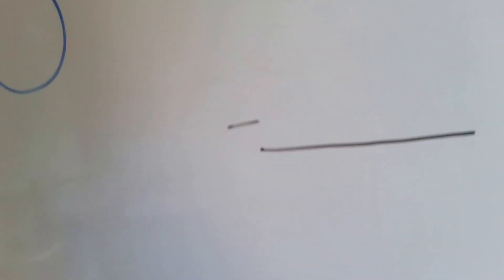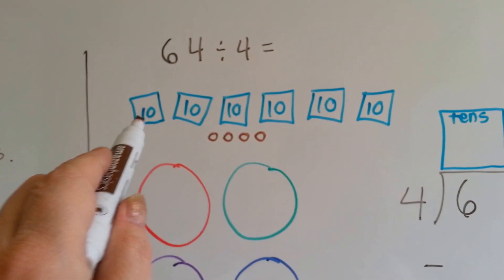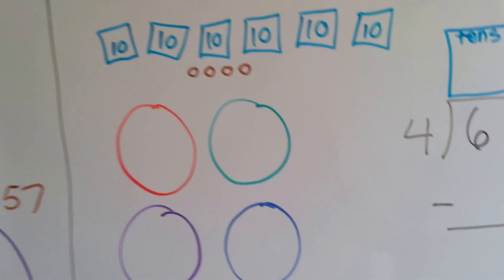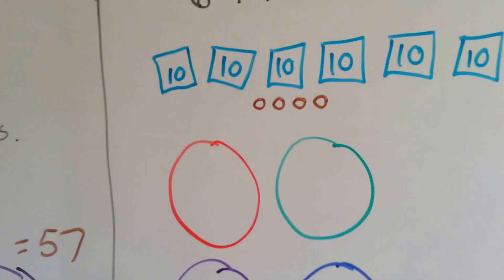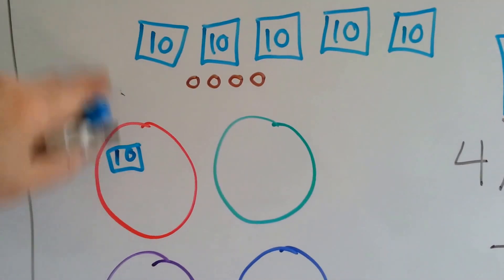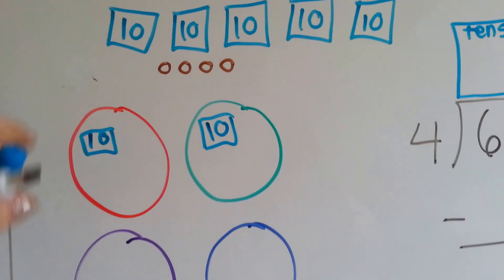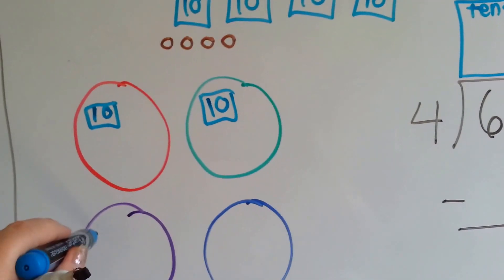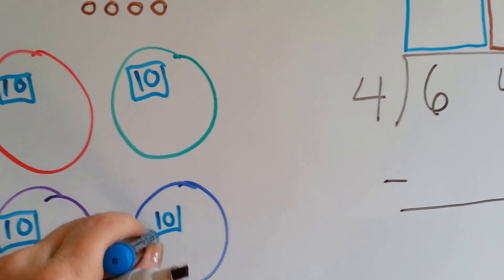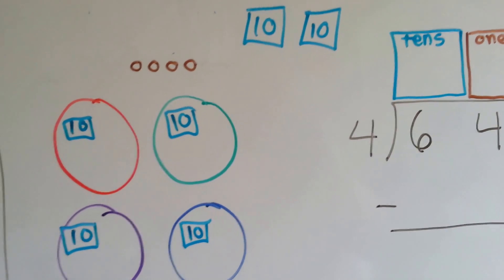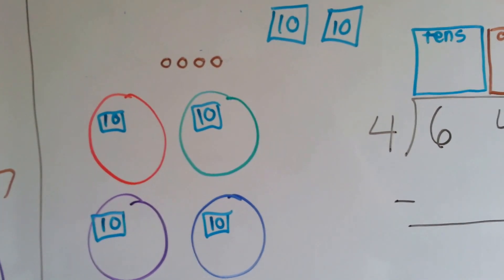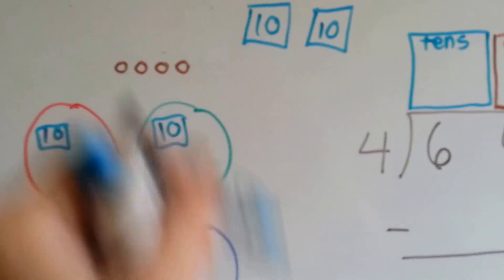So now, what if there were 64 cookies — 6 bags of 10 and 4 separate ones — and we wanted to split it between four people? Well, we could give each person a bag of 10 cookies. That's one bag, two bags, three bags, four bags — they each get a whole bag. But now we've got two remaining bags and 4 separate cookies. How can we split those? We're going to have to open these bags up.